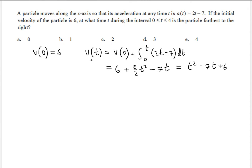Now the next part is to understand what the particle being farthest to the right means. When the particle is to the right, it means the position value will be positive. Being asked for the particle farthest to the right means finding the greatest position value — the time at which there is the greatest position. Since we don't have the position function yet, we need to find it.